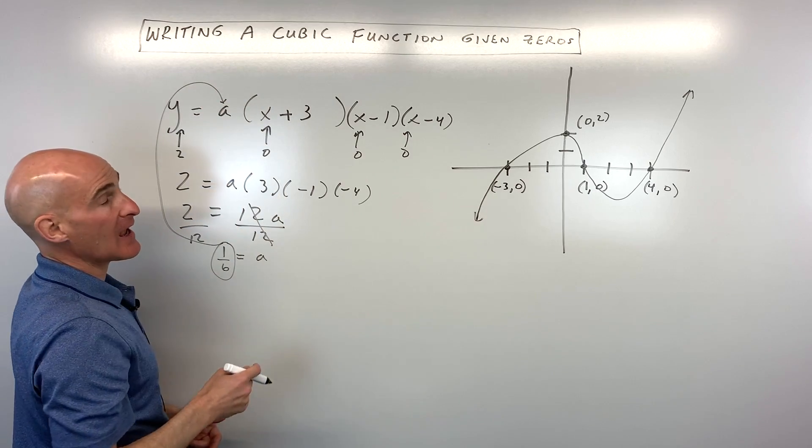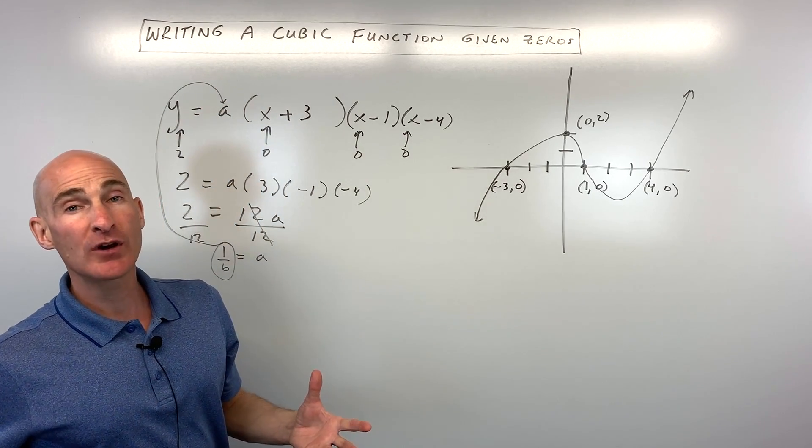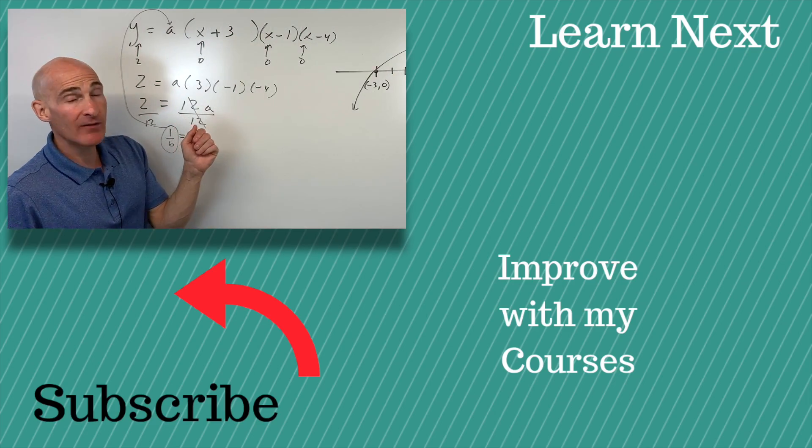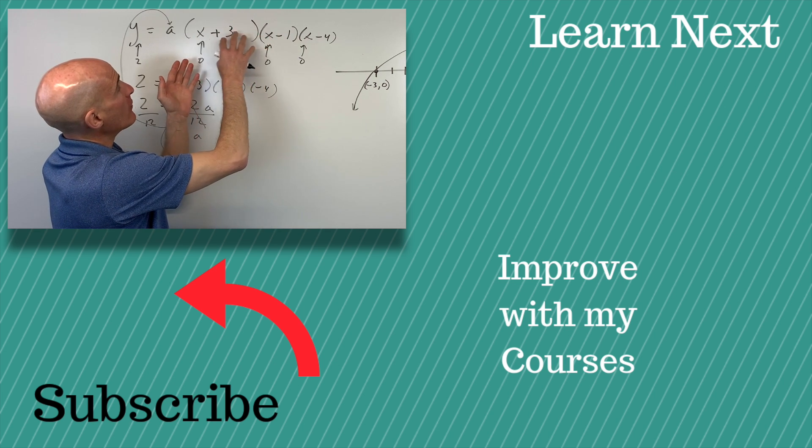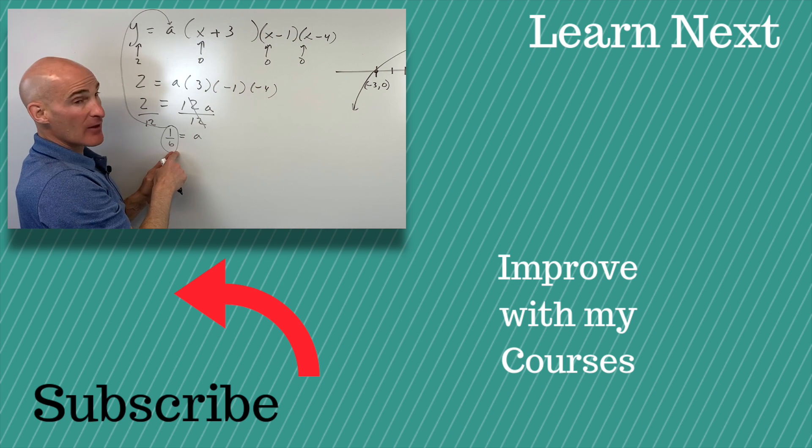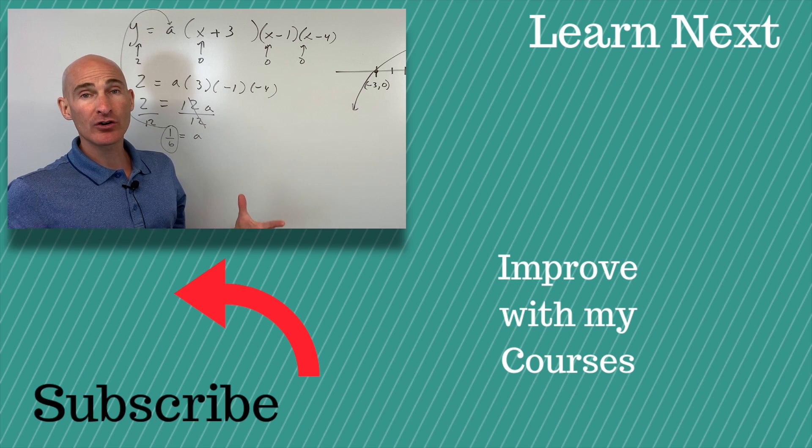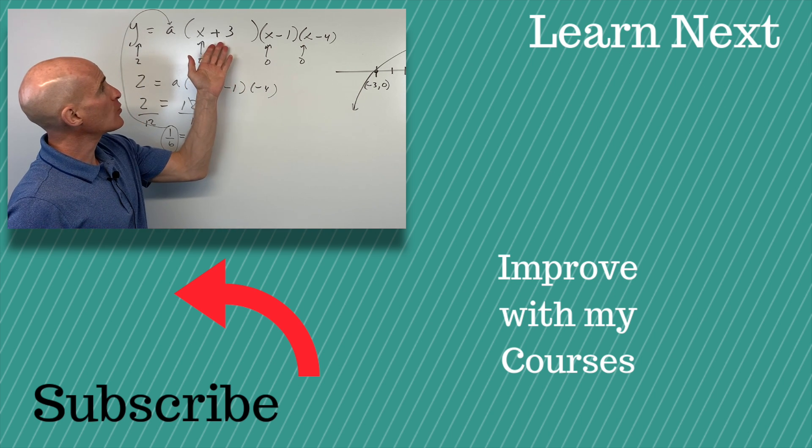And all we have to do now is put it back in for a and that's going to be our cubic equation. Now if you want to take it one step further you can multiply all this out and then also multiply it by the one-sixth and that'll be completely simplified.